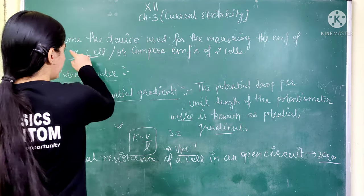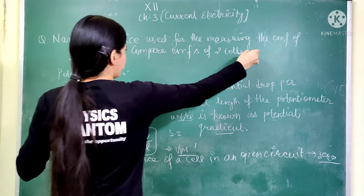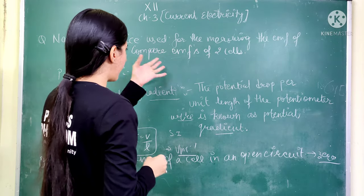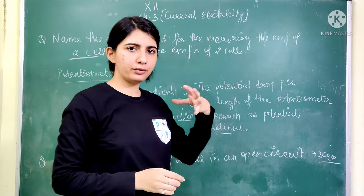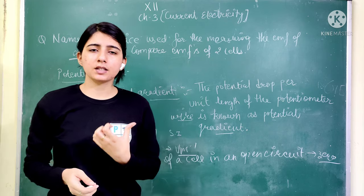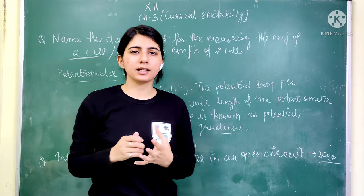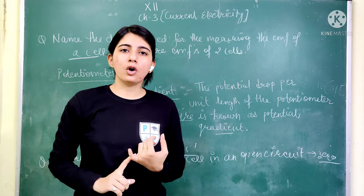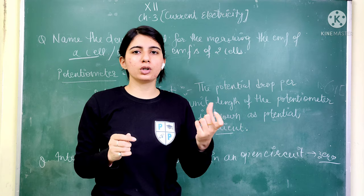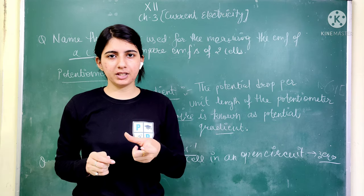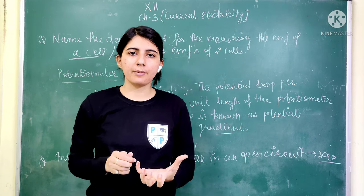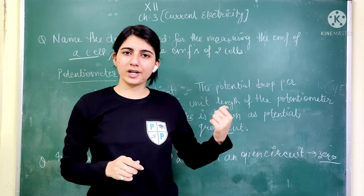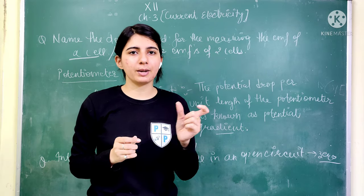Now the question is: Name the device used for measuring the EMF of cells, or for the comparison of EMF of two cells. Any device that calculates or measures the EMF of cells, and also the comparison between two EMFs — what is the name of this device? There are two questions; both can be asked separately.